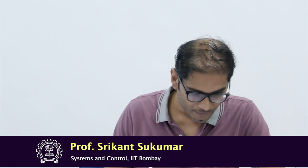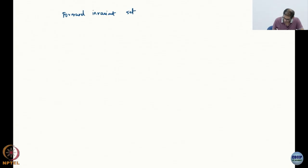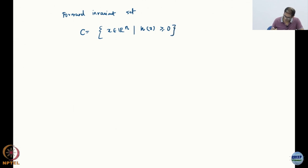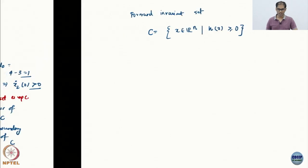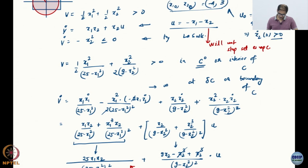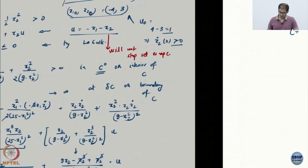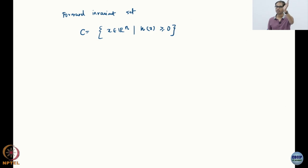Now I am going to talk about some theory. I am going to define what I would call a safe set or forward invariant set. This is defined as C. Suppose I define my set using some function. Notice that I have defined it the other way round. I have defined it using 25 minus x1 squared greater than or equal to 0, and 9 minus x2 squared greater than or equal to 0. H can be an amalgamation of 25 minus x1 squared and 9 minus x2 squared. That is the set C.